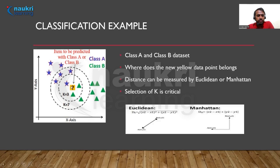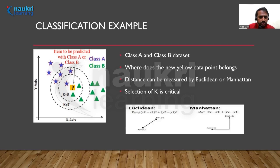For K equal to three, it calculates the distance between the yellow point and the nearest star and two triangles. With K equal to three, we can say the point belongs to class B — the triangle class — because class B has the majority. Now if I increase K to seven, class A has four neighbors and class B has three, so the majority is with class A and the point would be classified as class A. This is the tricky part of KNN: how to select K. Selection of K is critical and can be determined using hyperparameter tuning and other methods.